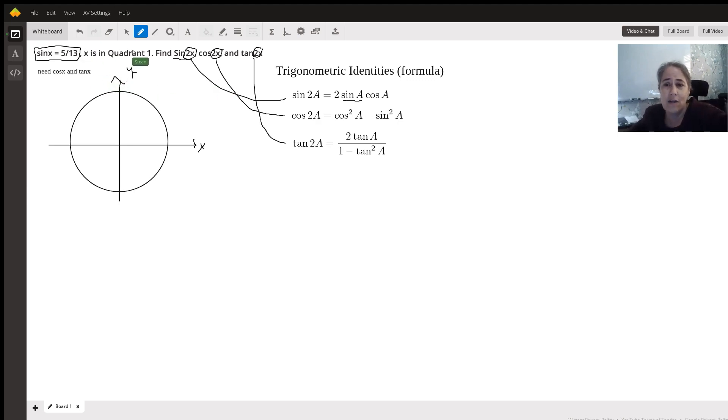So let's take a look here at our unit circle. And we know we're in quadrant one. So I'm going to go ahead and draw a triangle with a y value of 5 and a radius of 13. And this is just to help us think about the problem and also to find the rest of the trig ratios.